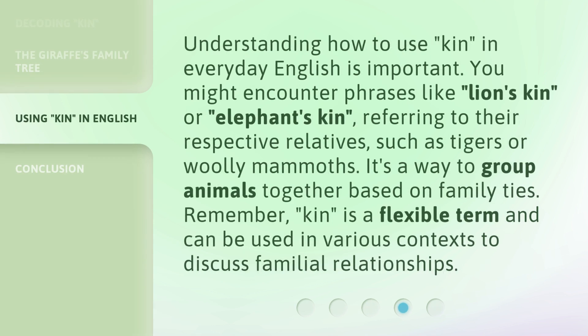Understanding how to use 'kin' in everyday English is important. You might encounter phrases like 'lion's kin' or 'elephant's kin,' referring to their respective relatives, such as tigers or woolly mammoths. It's a way to group animals together based on family ties. Remember, 'kin' is a flexible term and can be used in various contexts to discuss familial relationships.